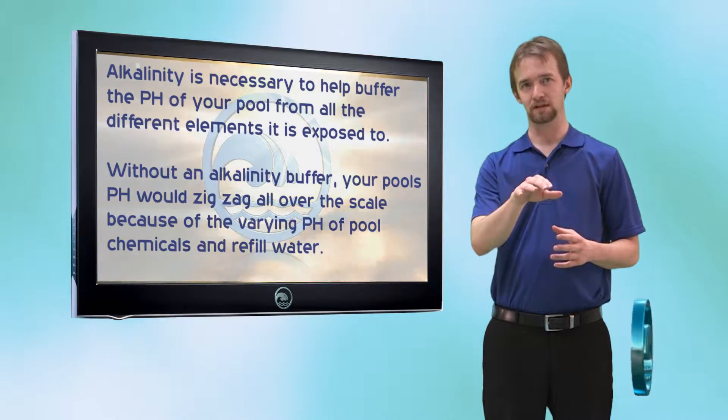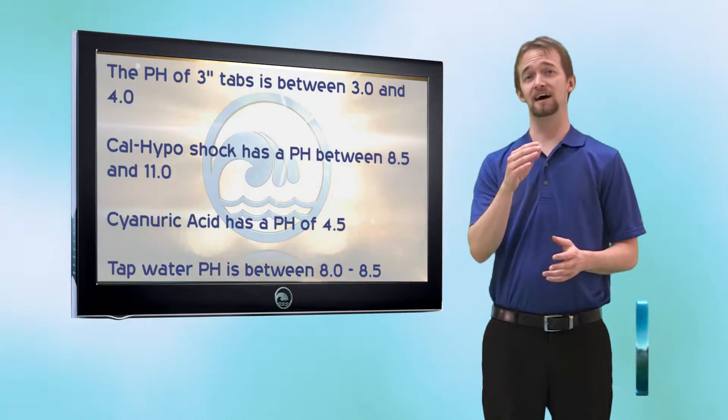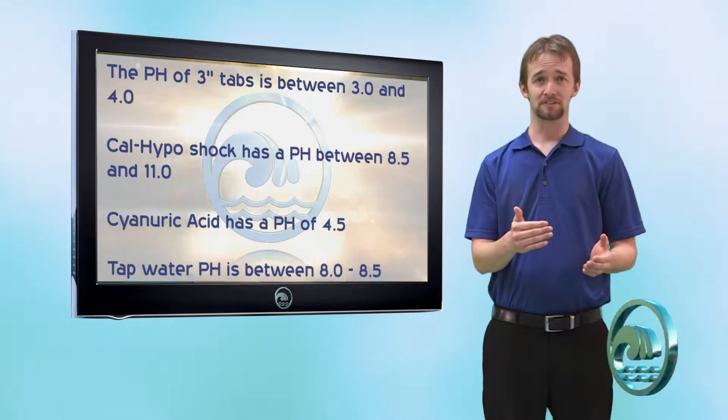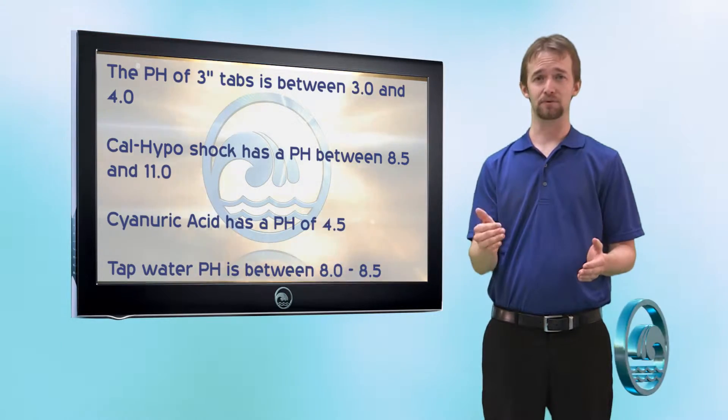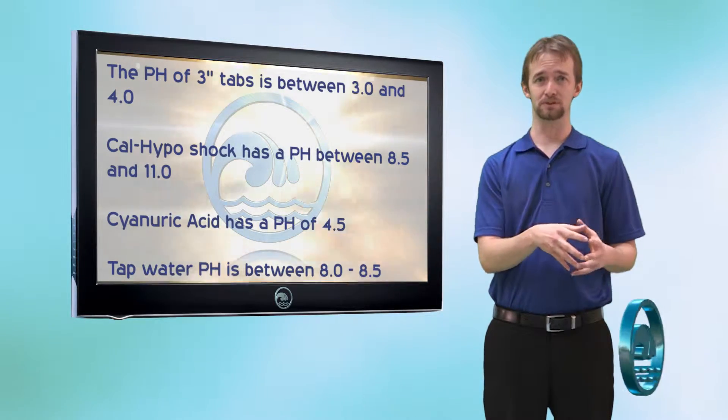Chlorine tabs have a low pH, anywhere from 3 to 4. Chlorine shock, calcium hypochlorite, has a high pH between 8.5 and 11. Tap water typically has a pH ranging from 8 to 8.5. So as you refill evaporated water, you're adding water that has a higher pH than what your pool should be at.